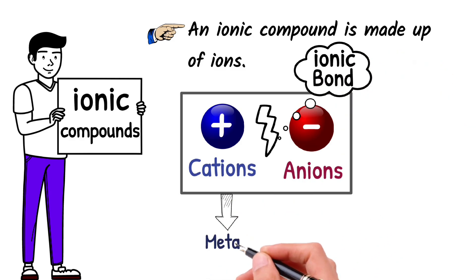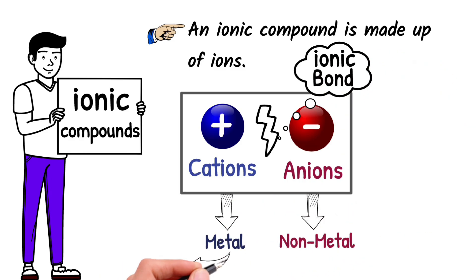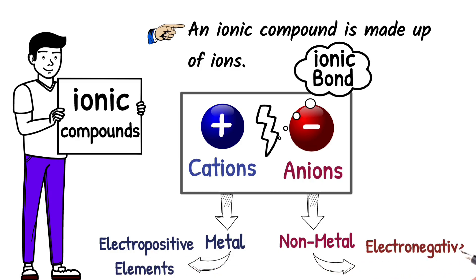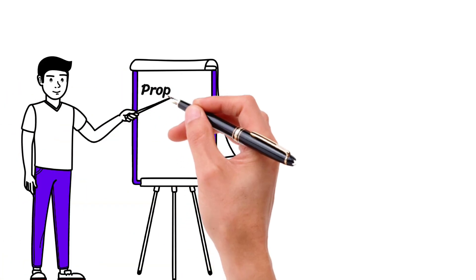Ionic compounds are made up of metals and non-metals. Metals are electropositive elements, while non-metals are electronegative elements. Now let's discuss some properties of ionic compounds.